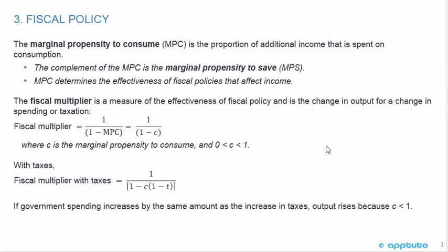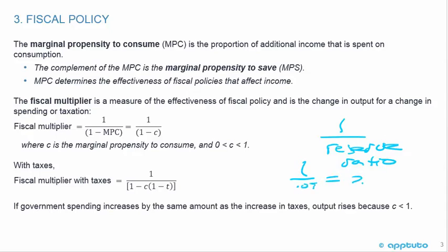On this slide we're going to look at the fiscal multiplier. Recall we had the money multiplier, which was 1 divided by the reserve ratio — just a quick review. For example, if the reserve ratio was 5%, the money multiplier would have been 1 divided by 0.05, which equals 20 times. Quick review from monetary policy.